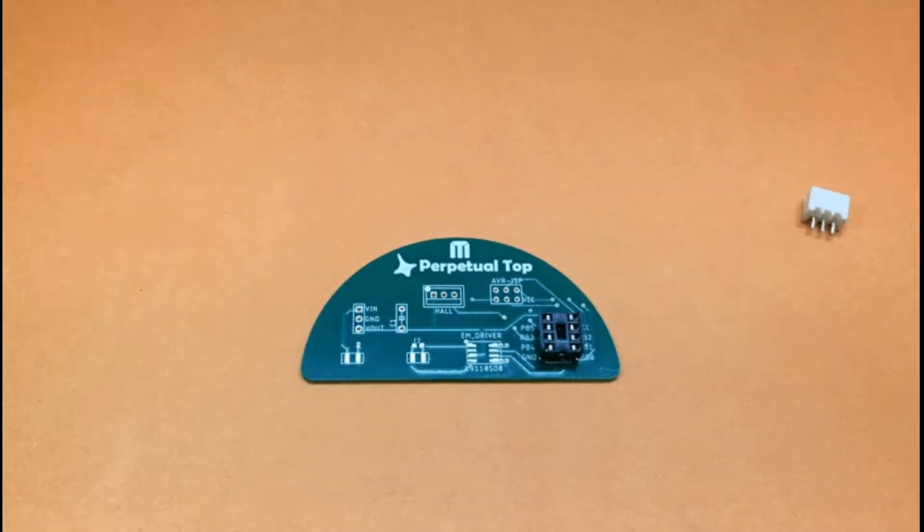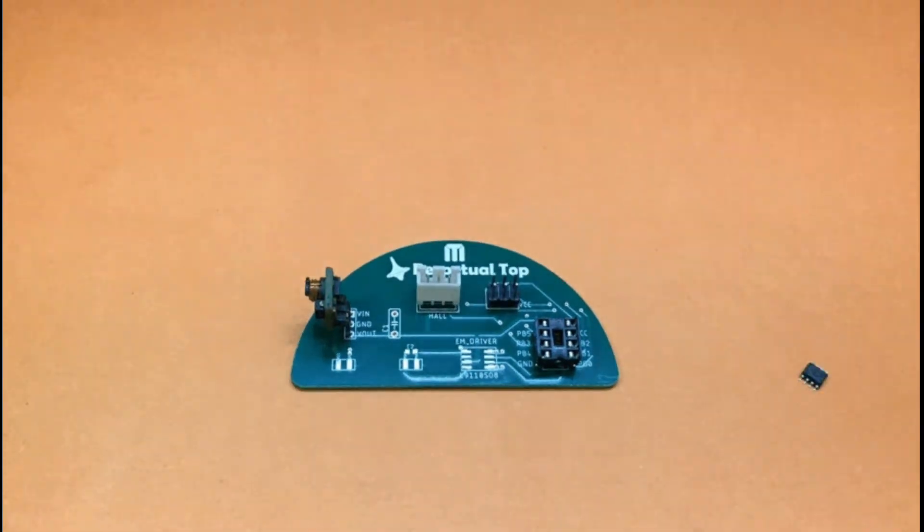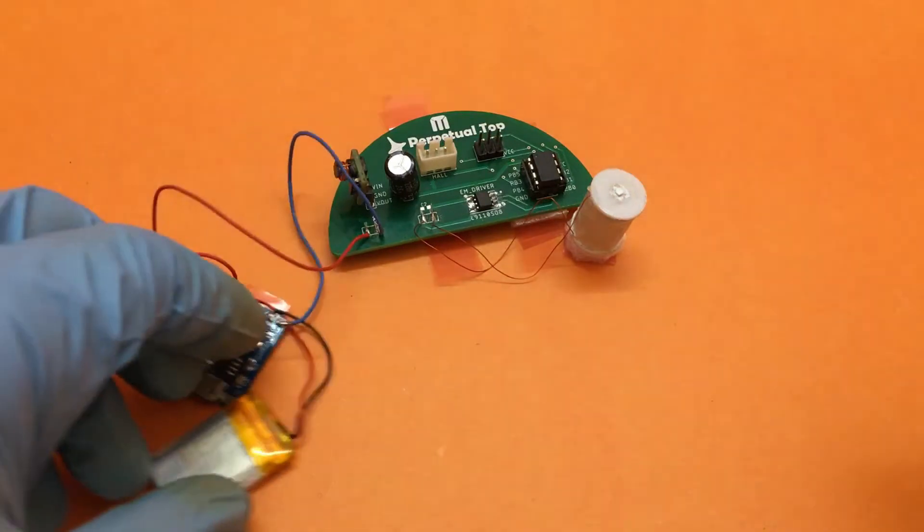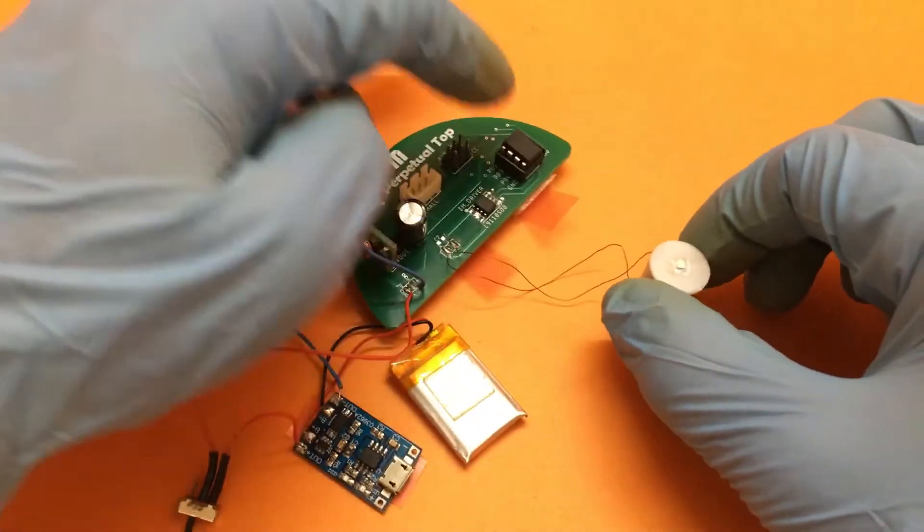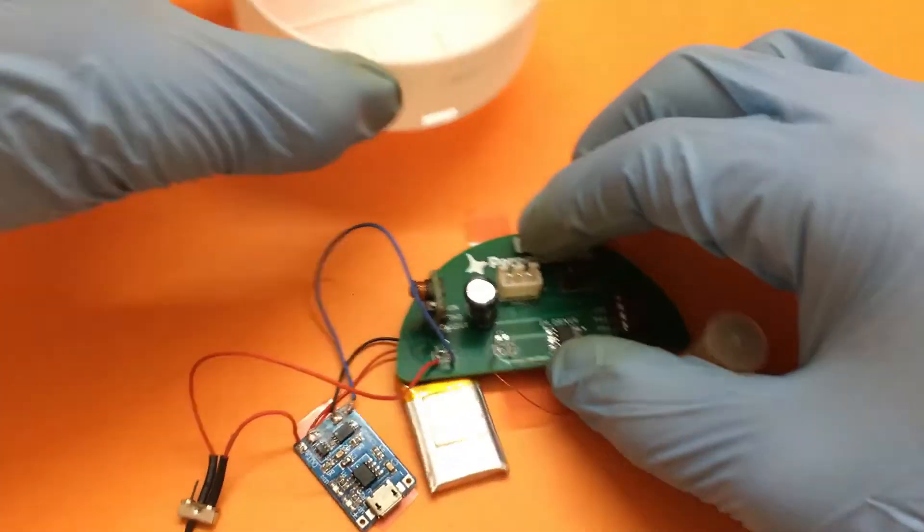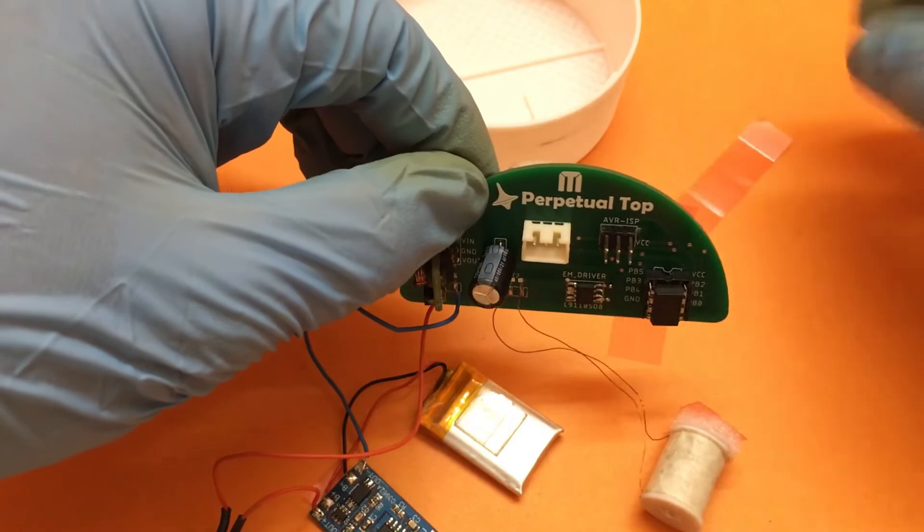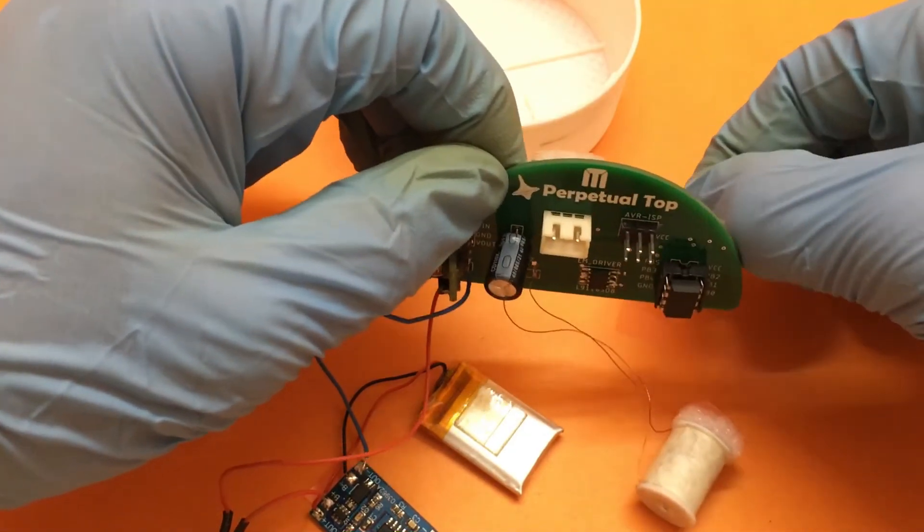Let's first solder all the components to the PCB, then attach the battery and the electromagnet. So our PCB with electromagnet and battery is now ready. I've printed this base for the enclosure, and now we can stick the PCB to the base using double-sided tape.